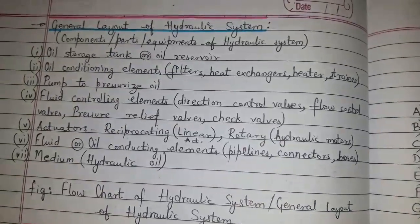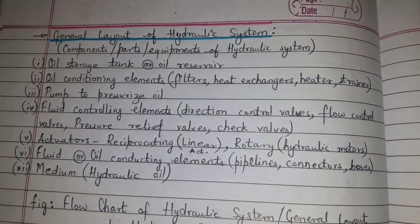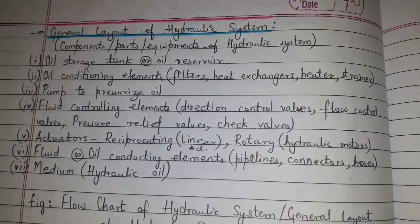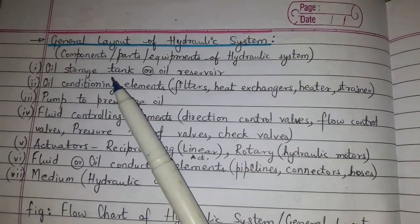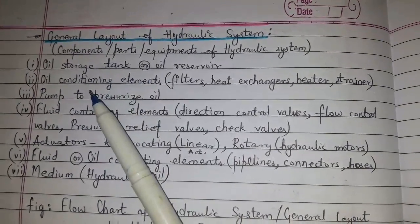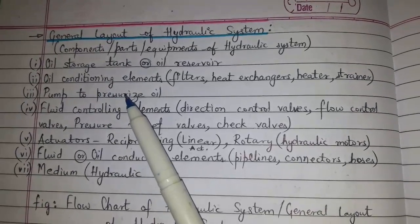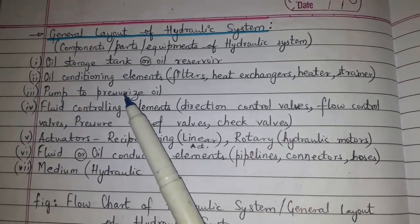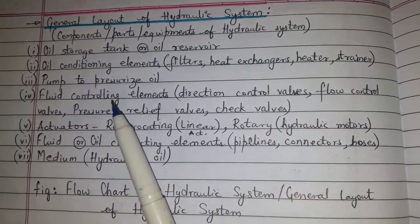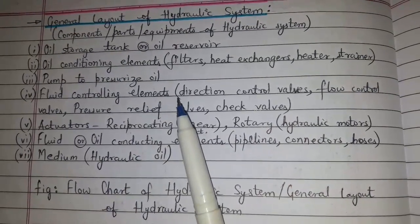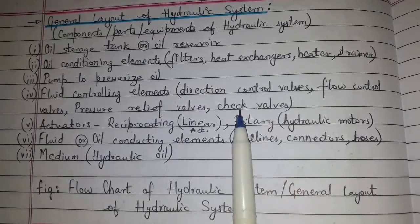General layout of hydraulic system. Here I have listed the components, parts, or equipment of the hydraulic system. Minimum components include: oil storage tank or oil reservoir; oil conditioning elements, i.e., filters, heat exchanger, heater, strainer; pump; and fluid controlling elements like directional control valve, flow control valve, pressure relief valve, and check valve.